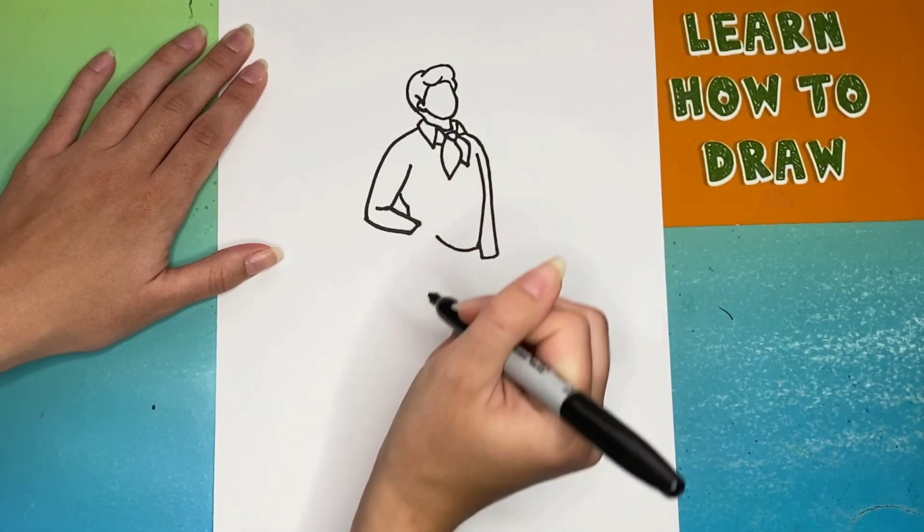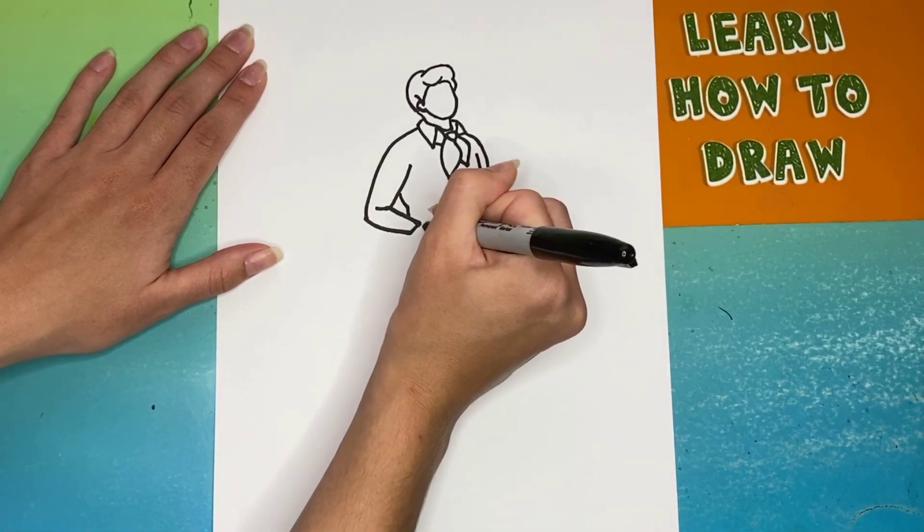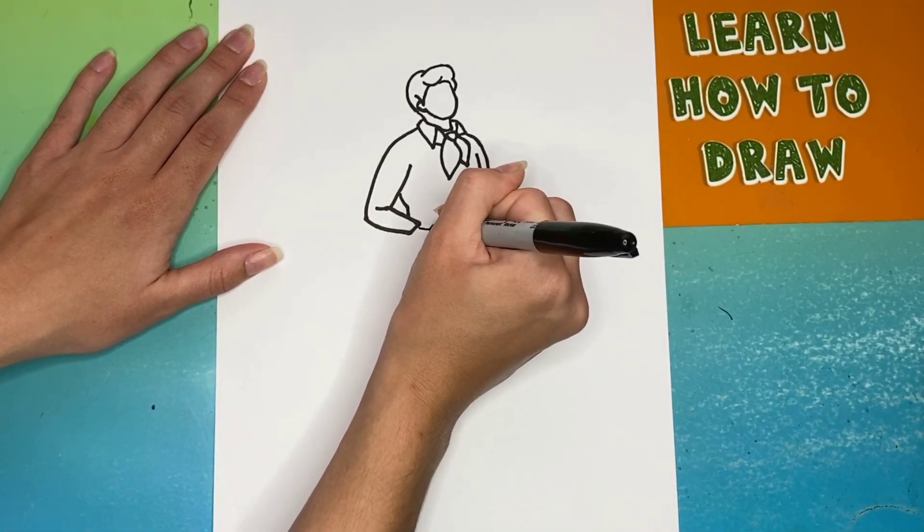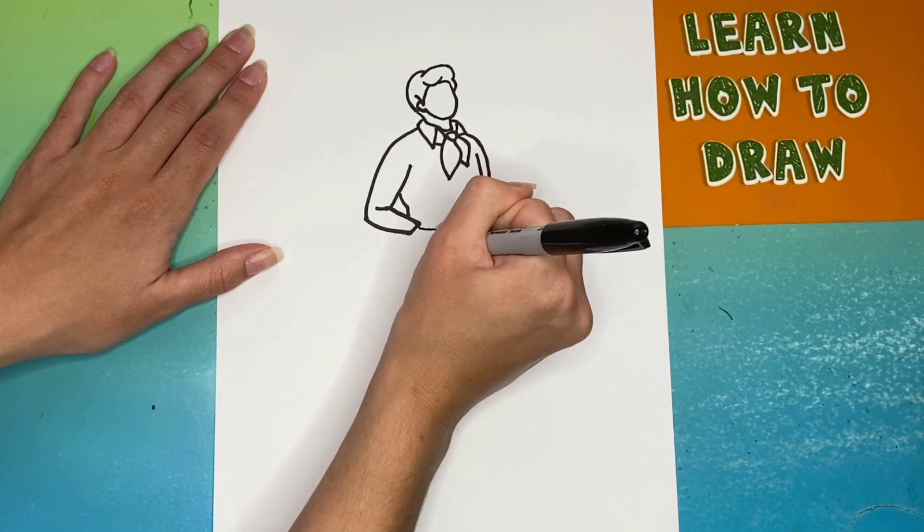Now we're going to finish the bottom side of his shirt. We're going to leave a small part not connected because that is where his hand will go. The bottom of his hand will just be a curve because his hand is going to be in his pocket.